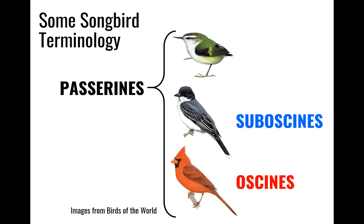Then there's the cardinal down here at the bottom. These are the oscines, or the proper songbirds, and they are proper songbirds because they learn a variety of different songs — they all have an essential learned component. Oscines are spectacularly diverse. Our northern cardinal represents one of over 3,000 species of oscines, of songbirds, found throughout the entire globe.